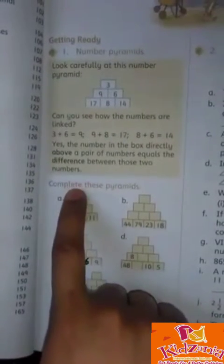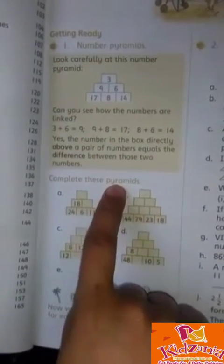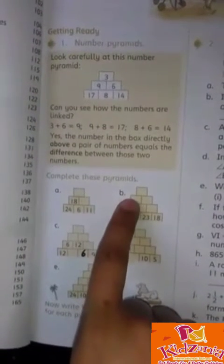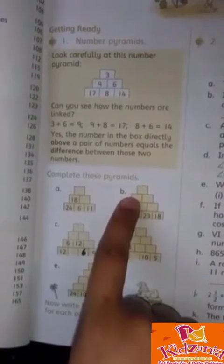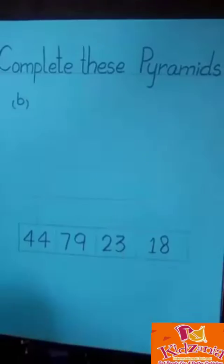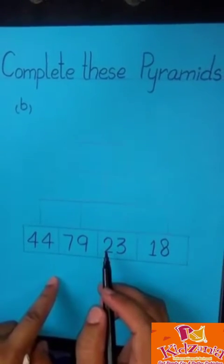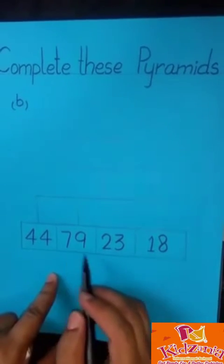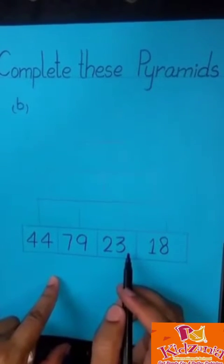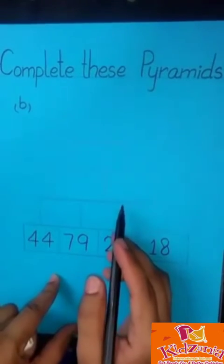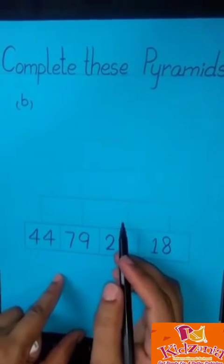Our first question is number pyramids. We solved the question today. The question is: complete these pyramids. These are the 5 pyramids. We complete the pyramid B of this page. Okay students, this is our question. This is a pyramid. This pyramid has 4 rows. The 4th row of this pyramid is filled. Now we fill the next 3 rows. Now let's start to solve the question.